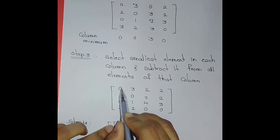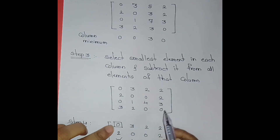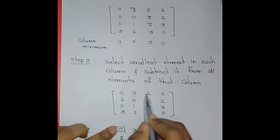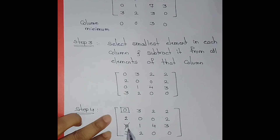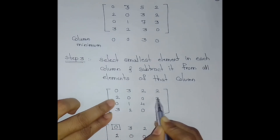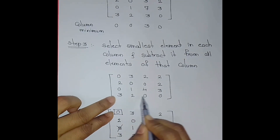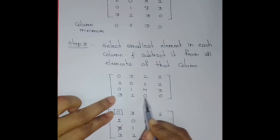After row and column reduction, the new matrix values are: 0, 2, 0, 3 / 3, 0, 1, 2 / 2, 0, 4, 0 / 2, 2, 3, 0. Now doing row scanning: the first row has exactly one zero, so we make the assignment there and strike off zeros in that column. The second row has 2 zeros — we cannot assign. The third row has no zeros. The fourth row has 2 zeros — we cannot assign. We can only assign when exactly one zero appears in a row.